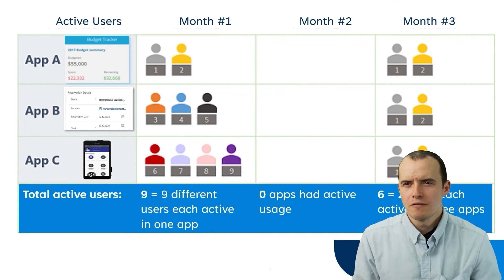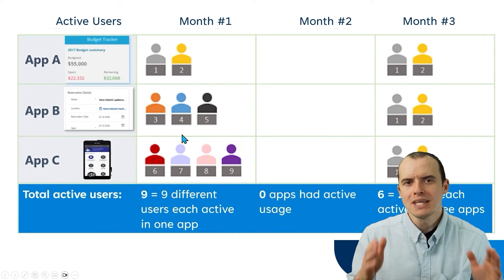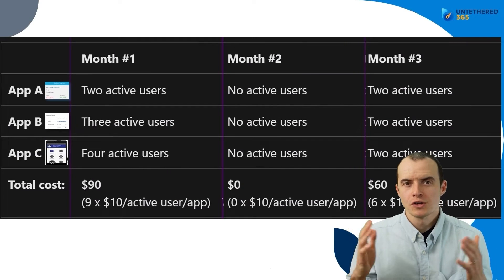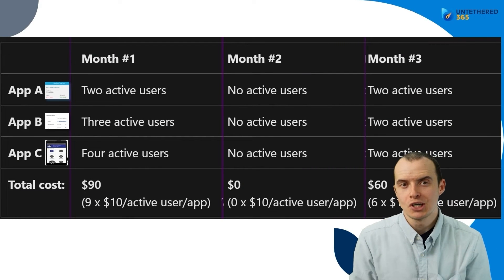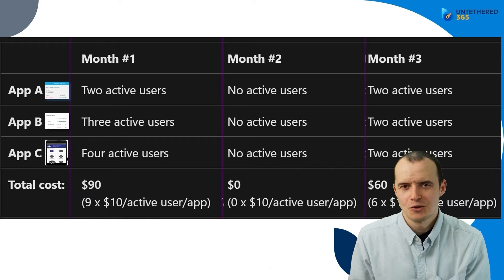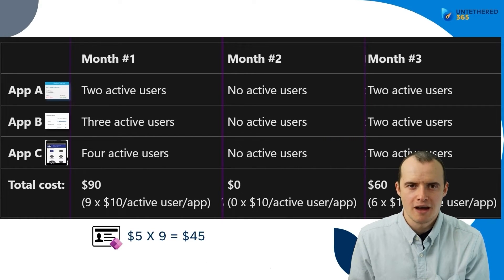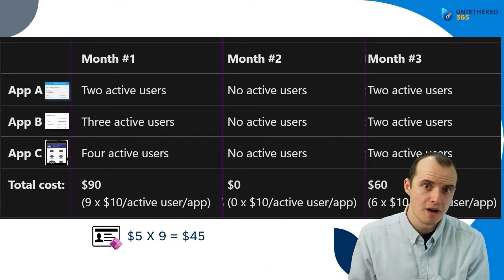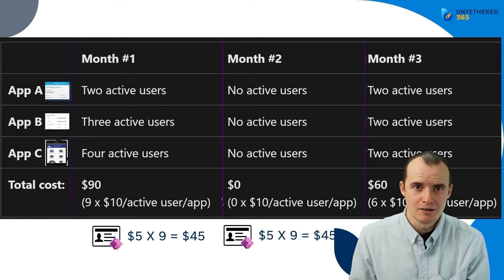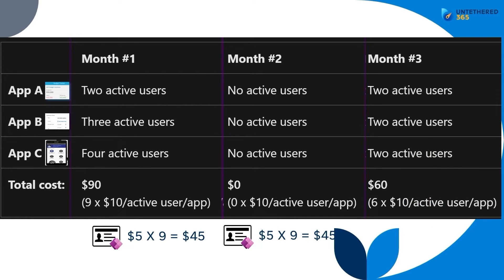What if instead we took all nine users and gave them the per app license? Over three months, per app is actually cheaper. Nine users times $5 is $45 a month — and that's $45 each month, every month, regardless of usage patterns.